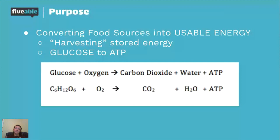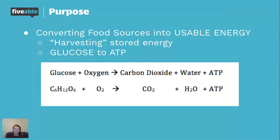Cellular respiration is converting food sources into usable energy — harvesting stored energy. The most basic form is converting glucose into ATP, our cellular energy. The overall formula: glucose and oxygen are converted into carbon dioxide, water, and ATP. That happens in a three-step process: glycolysis, the Krebs cycle, and the electron transport chain.